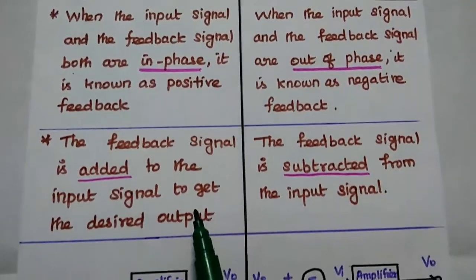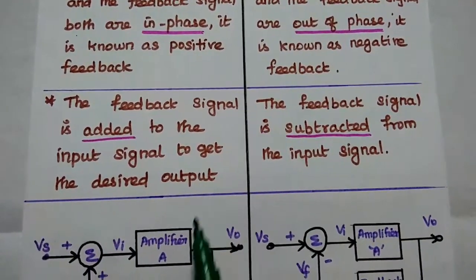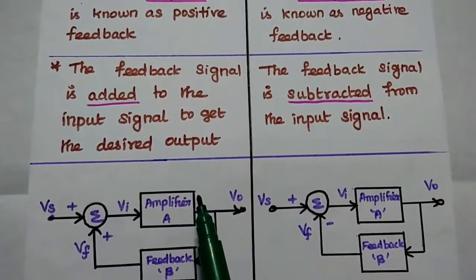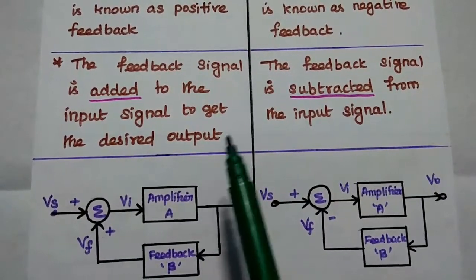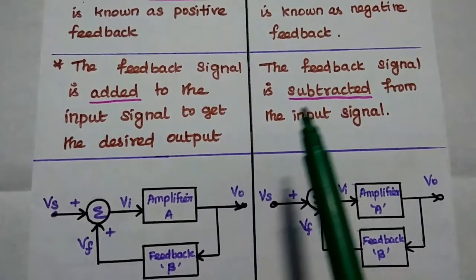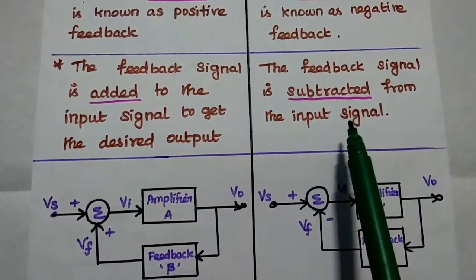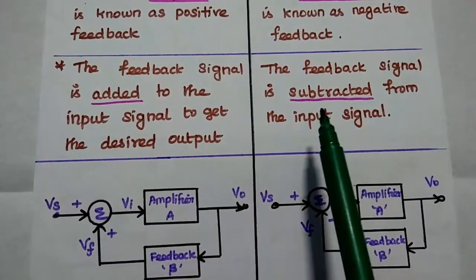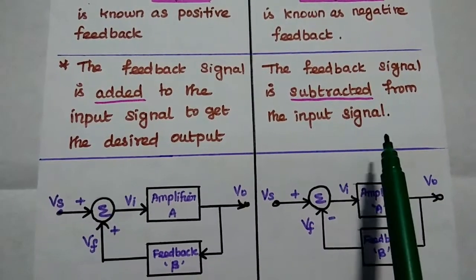In positive feedback, the feedback signal is added to the input signal to get the desired output. In case of negative feedback, the feedback signal is subtracted from the input signal.